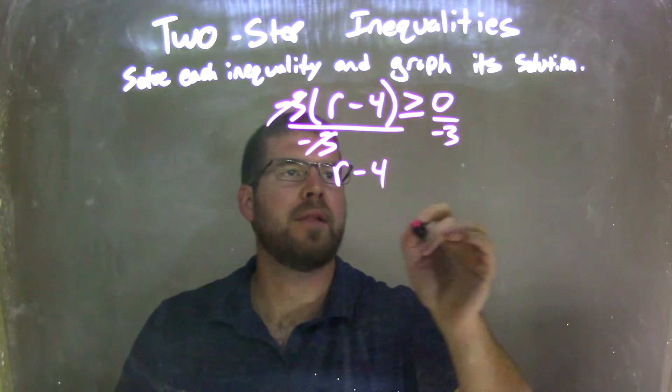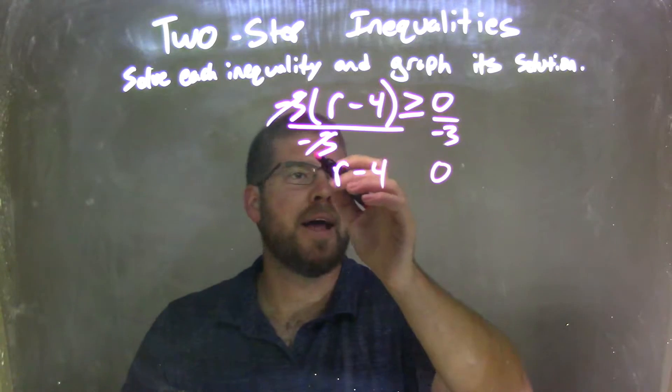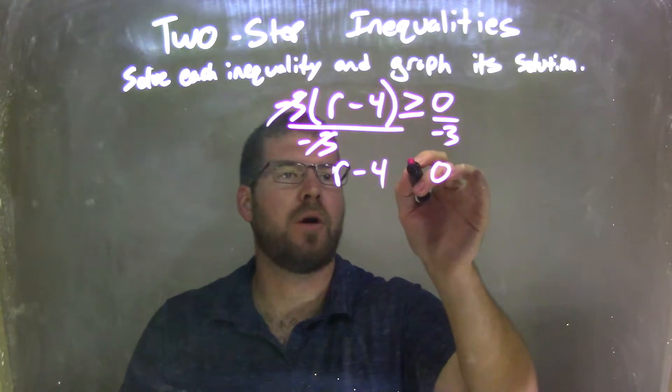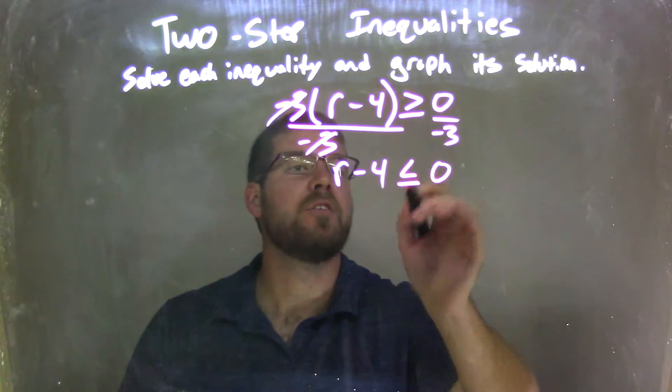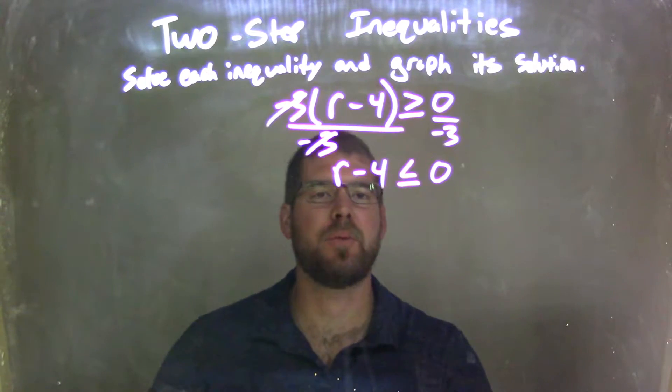I'm left with r minus 4 on the left, and 0 divided by negative 3 is just 0. But I divided by a negative over the inequality, so that inequality needs to flip from a greater than or equal to sign to a less than or equal to sign. Don't forget the equal to part.